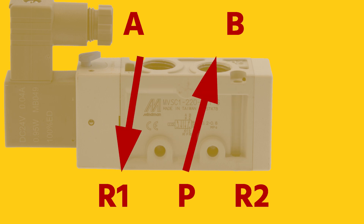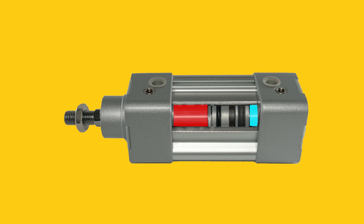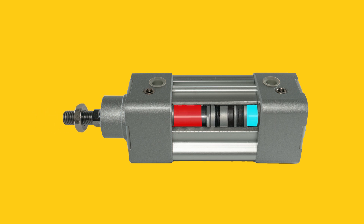The other appliance port is connected to an exhaust port. With the example of the double acting cylinder, it means that one chamber of the cylinder is pressurized while the other chamber vents, and vice versa.